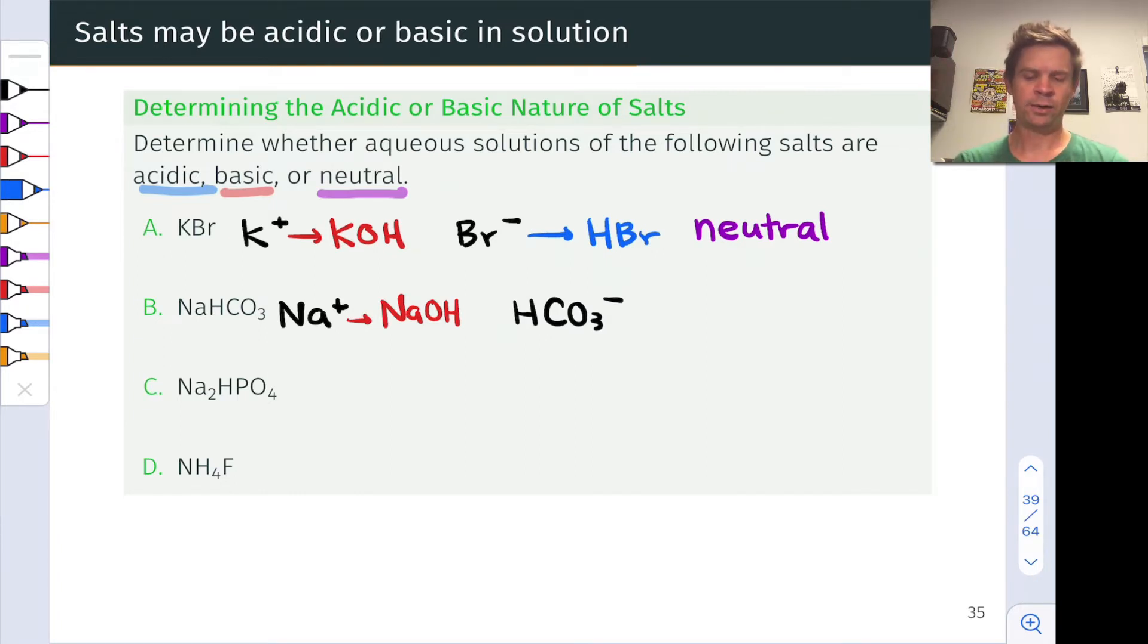HCO3 minus, well that's the conjugate base of something we know to be a weak acid, H2CO3. Let's remind ourselves here, this is a weak acid. It's an acid and it's not on the list of strong acids, therefore it must be weak. You could also look up a Ka value if needed to verify this.